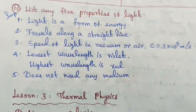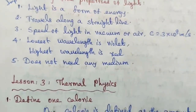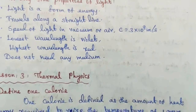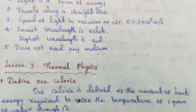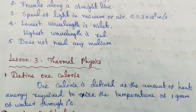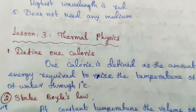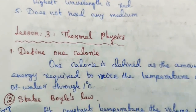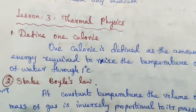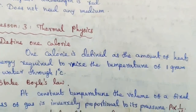Lesson 3: Thermal Physics. Question number one: define one calorie. One calorie is defined as the amount of heat energy required to raise the temperature of one gram of water through one degree Celsius. Question number two, important: state Boyle's law.